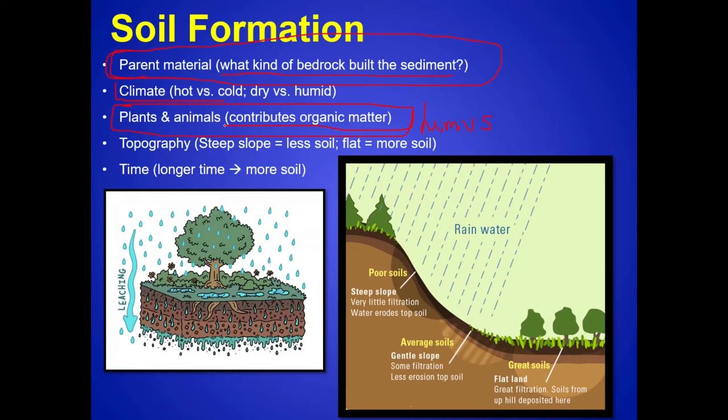Topography is another factor — not much soil can accumulate on hillsides. If you drive around a mountainous area, farmers aren't growing crops on hillsides because the topsoil is getting eroded and washed away by rain, coming to rest in the valley below. You get great soils in the valleys but poor soils on the hillsides. And finally, you just need time — it can take an inch per decade, per century, or even per thousand years to build up topsoil. It's precious.